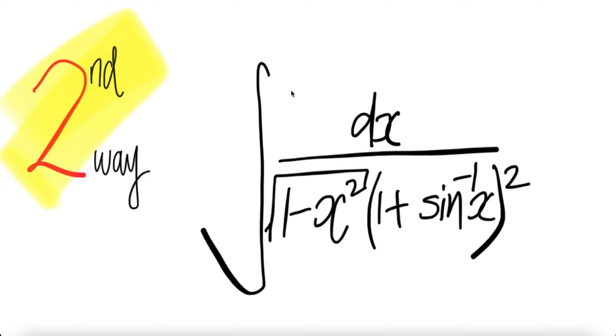Let us look at the second way to get the integral 1 over square root 1 minus x squared times 1 plus arc sine x whole thing squared.